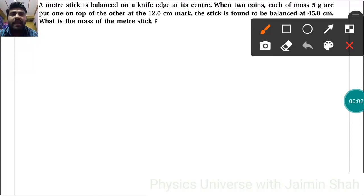Now the question is: a meter stick is balanced on a knife edge at its center. When two coins, each of mass 5 grams, are put one on top of the other at the 12 centimeter mark, the stick is found to be balanced at 45 centimeter.